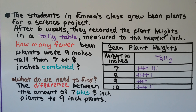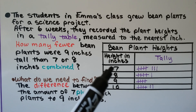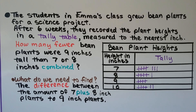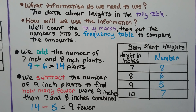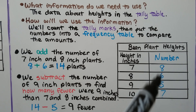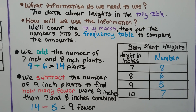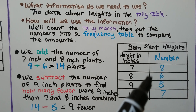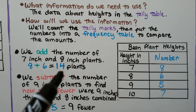What do we need to find? We need to find the difference between the amount of seven-plus-eight-inch plants and the nine-inch plants. We need to combine the tallies for the seven-inch and eight-inch plants and compare that to the nine-inch plants. We'll count the tally marks, then put the numbers into a frequency table to compare the amounts. Adding the number of seven-inch and eight-inch plants: eight plus six equals fourteen plants.